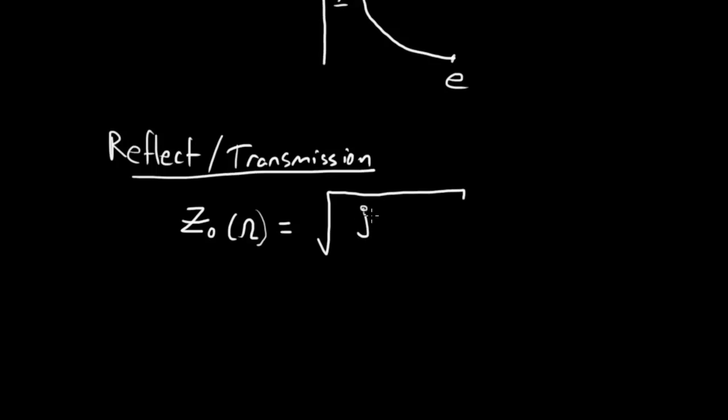When you write out the expression for the characteristic impedance, this is what it looks like. In the numerator, under the square root, we have j omega mu, which is the permeability, the magnetic property of the material, over lowercase sigma, which is conductivity, plus j omega epsilon, which is the permittivity of the material.